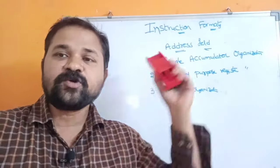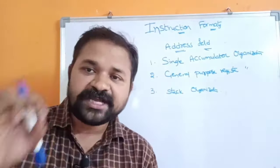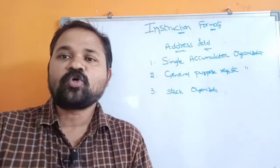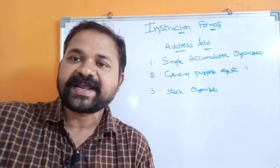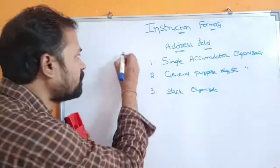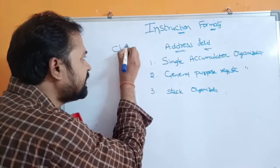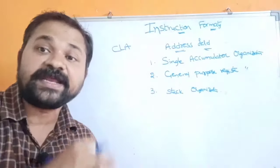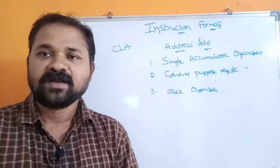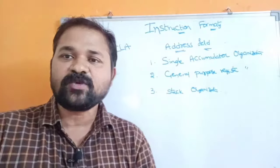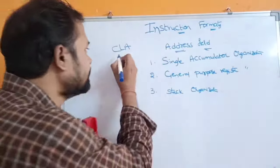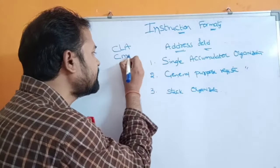In single accumulator organization, the accumulator is implicit. There is no need to specify the accumulator explicitly; automatically, depending upon the instruction, the accumulator will be taken as one operand. For example, CLA stands for clear accumulator — this instruction doesn't contain any operand. When CLA is executed, the content of the accumulator will be cleared. CMA stands for complement accumulator; here also the accumulator is implicit.